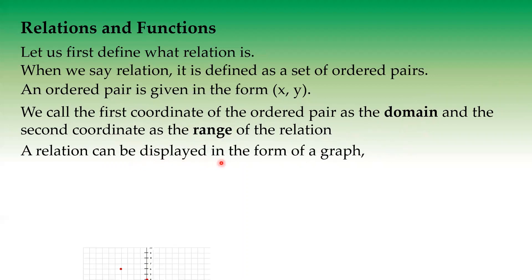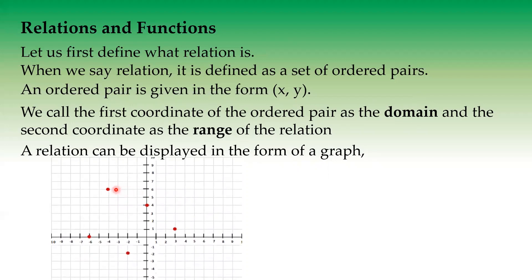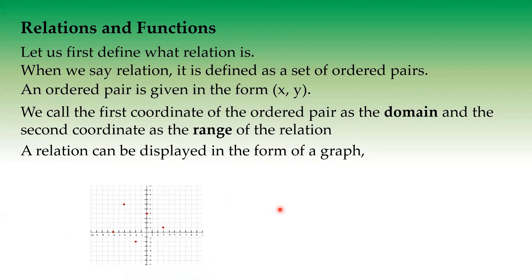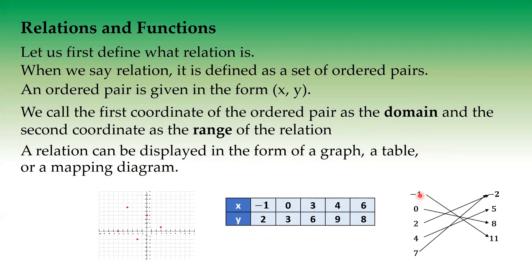A relation can be displayed in the form of a graph. So we have here a sample graph showing different points. Each point represents an x and y value, showing the domain and range of the graph. It can also be represented using a table — with values of x in one row and values of y in another row — or using a mapping diagram, where we have clusters of values for domain and range, connected by lines to show the ordered pairs.